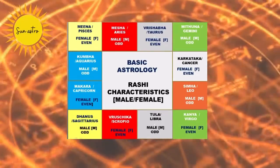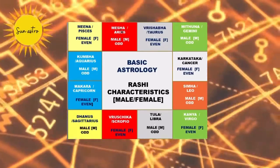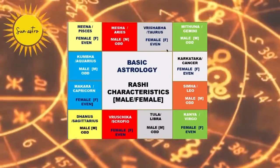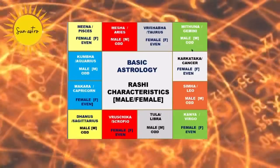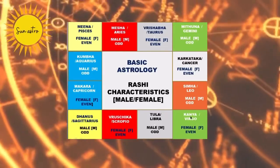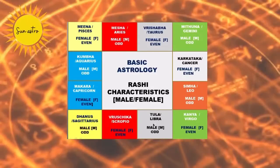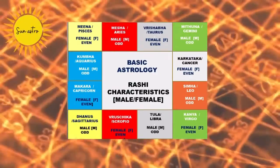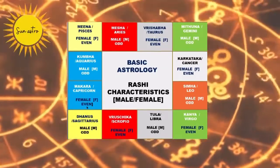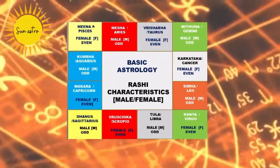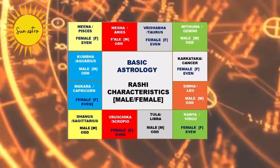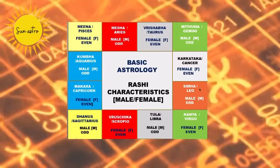Consider this chart. We start from Mesha Rashi. The Mesha Rashi is considered as the male or odd sign. The Rishabha Rashi is considered as the female or even sign. Mituna Rashi as the male or odd sign, and so on. For easy remembrance, we can just start from Mesha Rashi: M, F, M, F, M, F and so on, alternating male and female through all 12 signs. Kumbha Rashi is male or odd sign, and Meena Rashi is female or even sign.